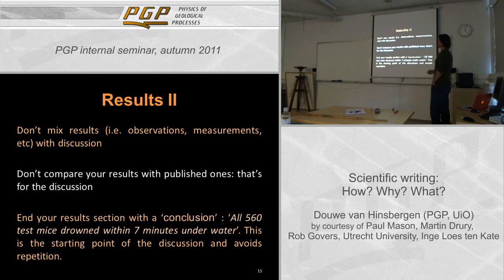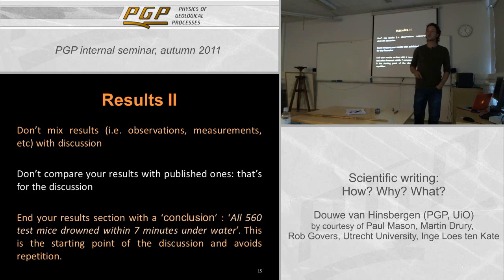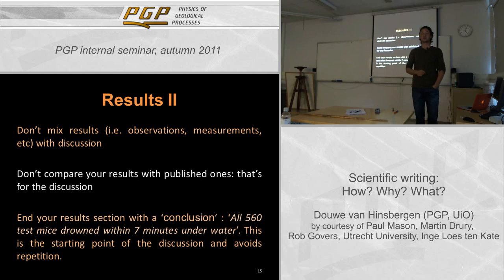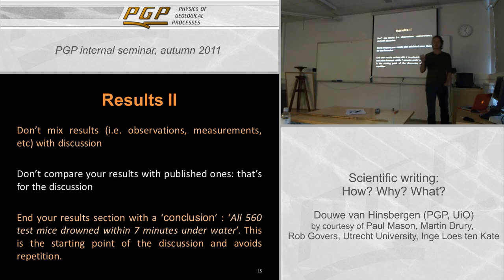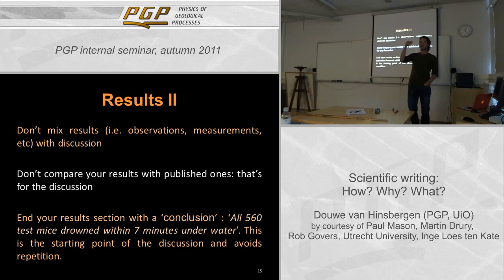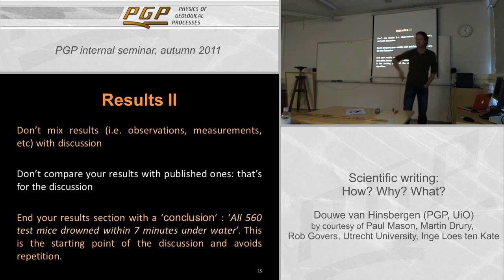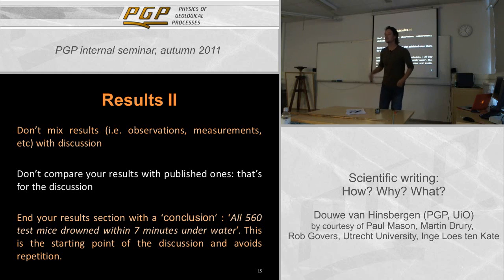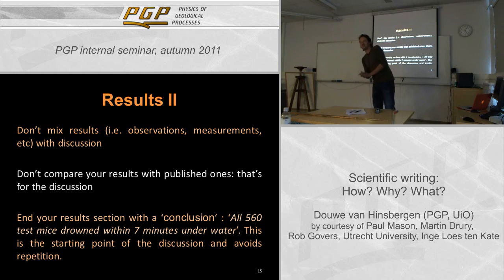End your results section with a conclusion — a summary of your results. For instance: 'all 560 test mice drowned within seven minutes underwater.' That is the starting point for the discussion of the paper. Take the reader by the hand. After very honestly describing all your data, give a summary or main point, because listing table after table of measurements is great but readers are not going to read all of it.